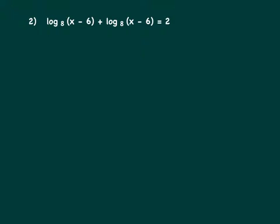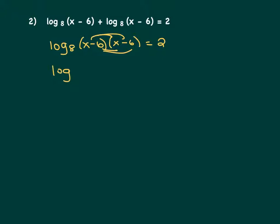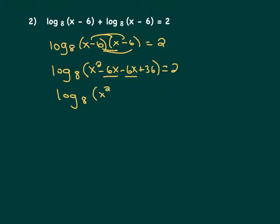Let's combine these two log expressions. Since there's an addition sign between them, we can combine into one single log term by multiplying (x minus 6) and (x minus 6). If we double-distribute this out, we get log to the base 8 of x squared minus 6x minus 6x plus 36. Combining like terms, that's log to the base 8 of x squared minus 12x plus 36, equals 2.